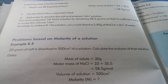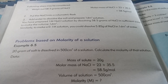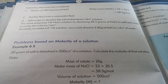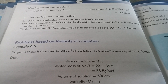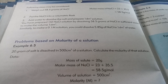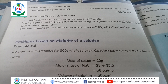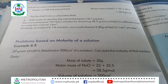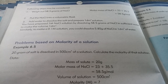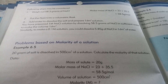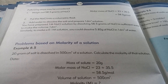First of all, we write the atomic mass of sodium, which is 23. Then we add the atomic mass of chlorine, that is 35.5. We add these two values: 23 and 35.5.